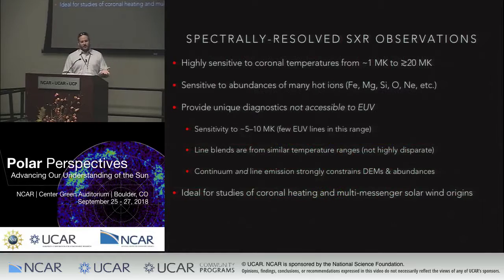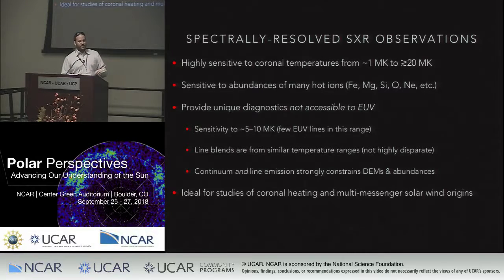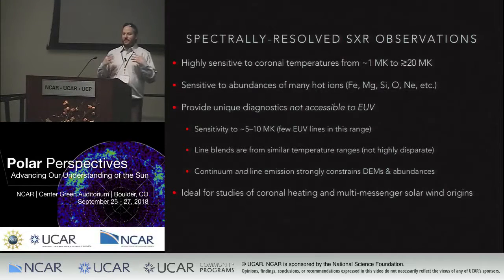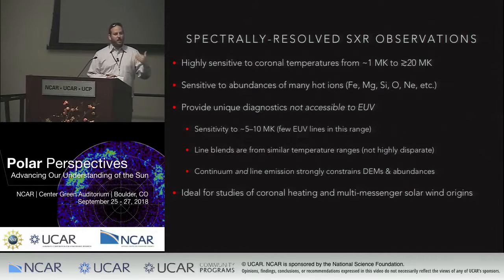So I'll give you all the meat up front. Soft x-ray observations, particularly spectrally resolved, provide us with sensitivity to coronal temperatures from a million degrees all the way to tens of millions of degrees — the entire coronal temperature range is accessible to soft x-rays. Additionally, soft x-rays also probe the abundances of many hot ions including iron, magnesium, silicon, as well as the harder-to-ionize elements like oxygen, carbon, neon, and argon. Soft x-rays provide unique diagnostics that are not accessible to the EUV, with sensitivity to the few million to 10 million degree range where EUV is far less sensitive.